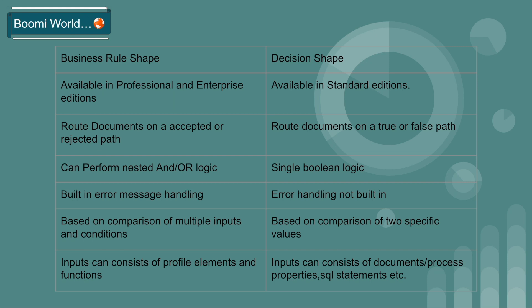Business Rule Shape is available in Professional and Enterprise editions, while Decision Shape is available only in Standard editions. Business Rule Shape routes documents on an accepted or rejected path, whereas Decision Shape routes documents on a true or false path.